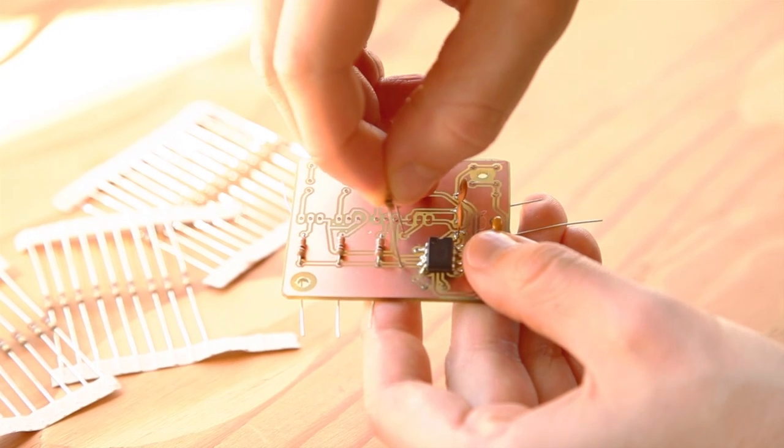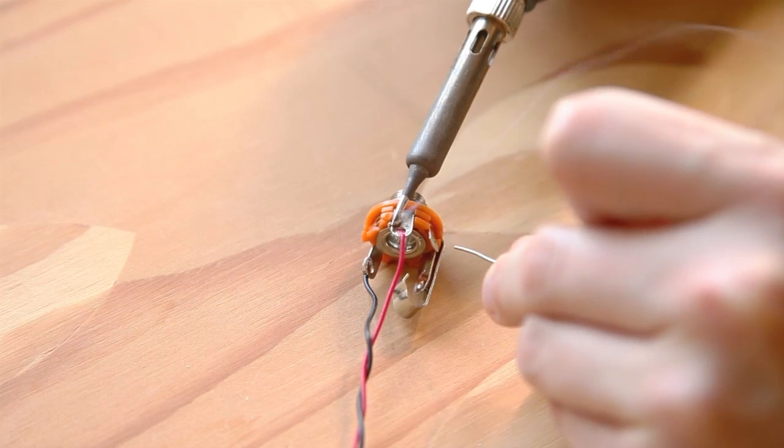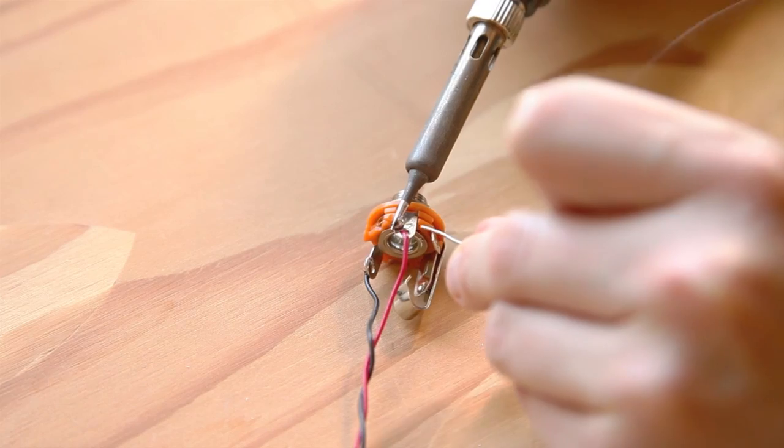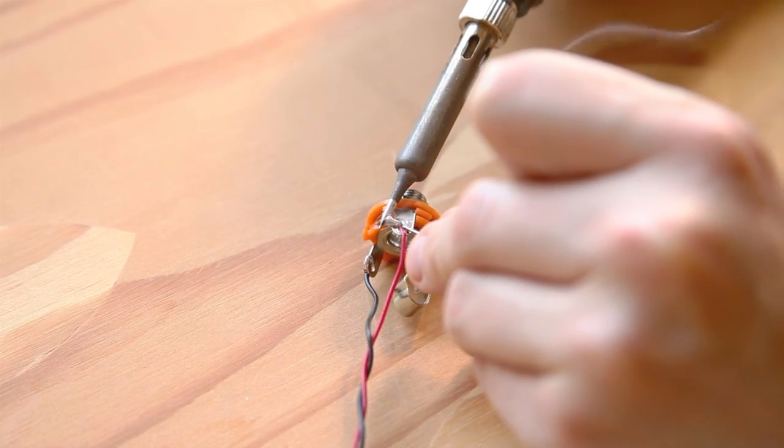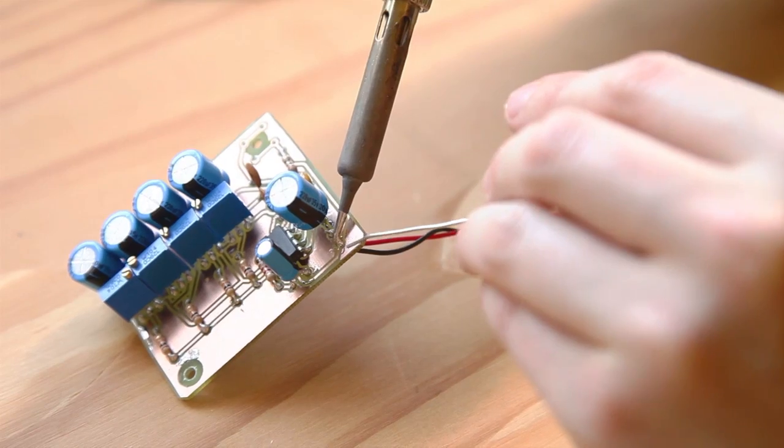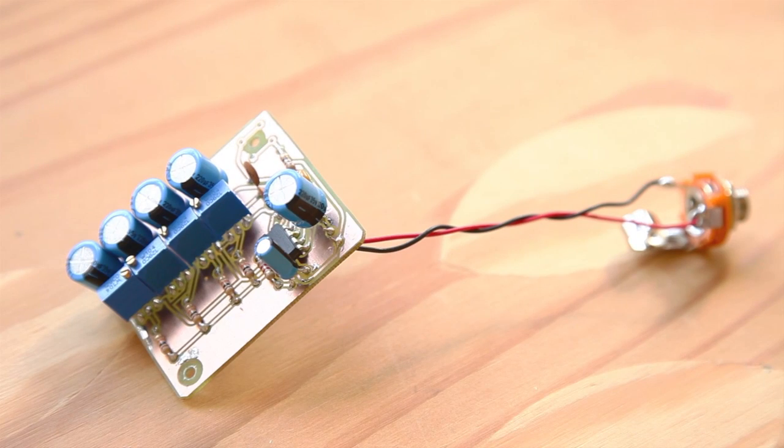Populate the amp board with the necessary components. Strip and solder two pieces of hookup wire to the one-quarter inch mono audio jack. Solder their respective ends to the positive and negative points on the audio board.